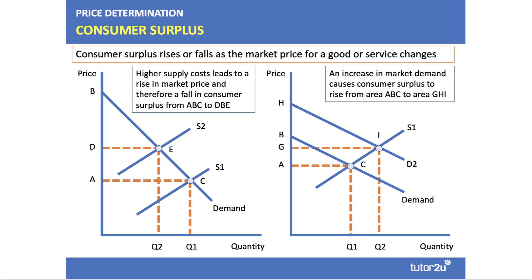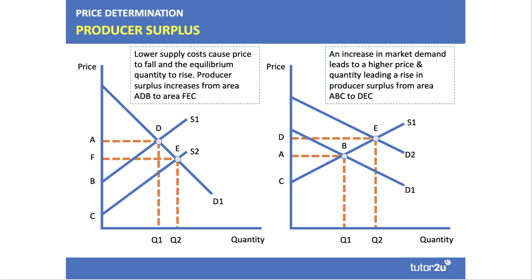A word of advice for the exam when showing consumer surplus: better to label than shade. Shading doesn't look good — it looks scrappy. Labeling looks neat, and we want our diagrams to look really good as it sends a message to the examiner. Producer surplus is of course the difference between the price the firm is willing and able to supply a product for and the price they actually get in the market — it's the area above the supply curve and below the price. Again, it's important to show areas of producer surplus using labels.